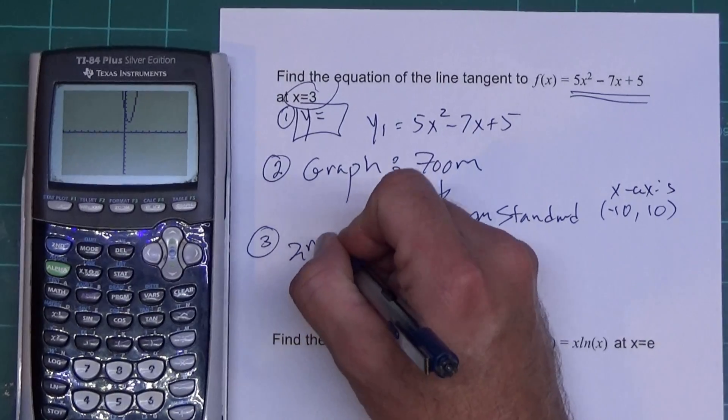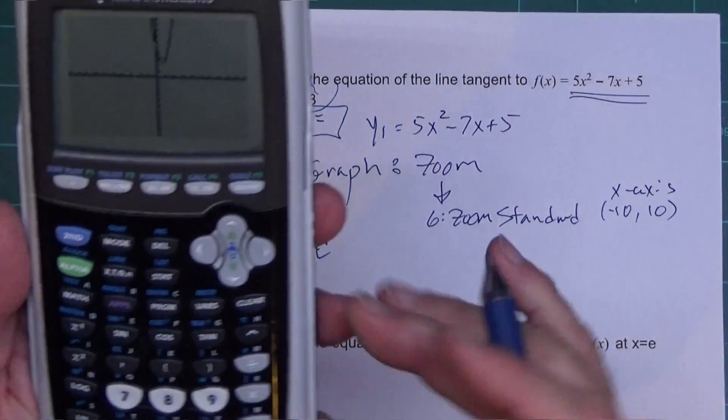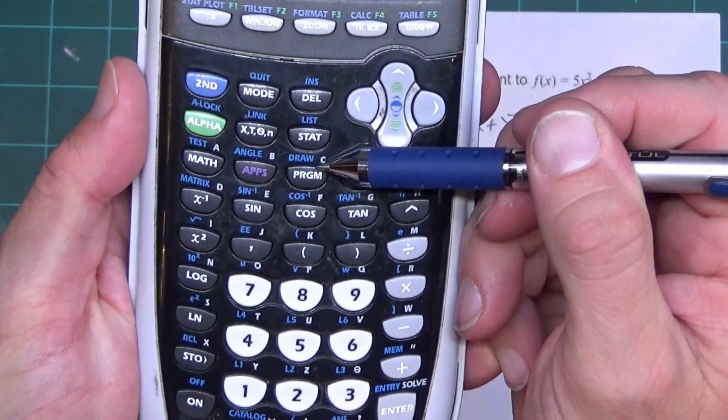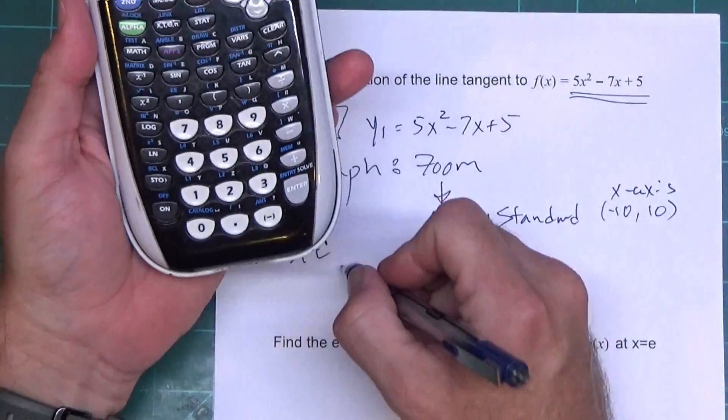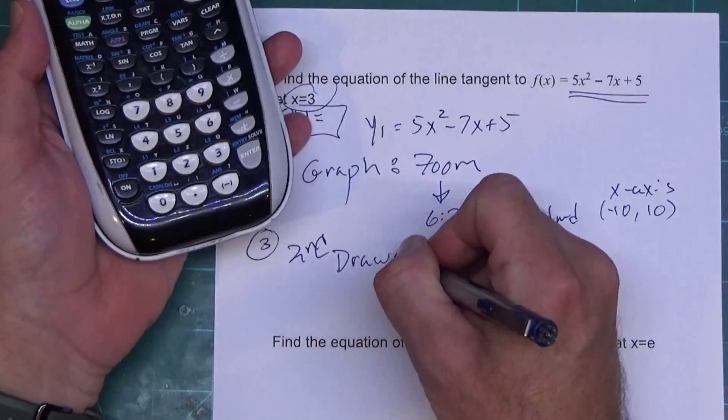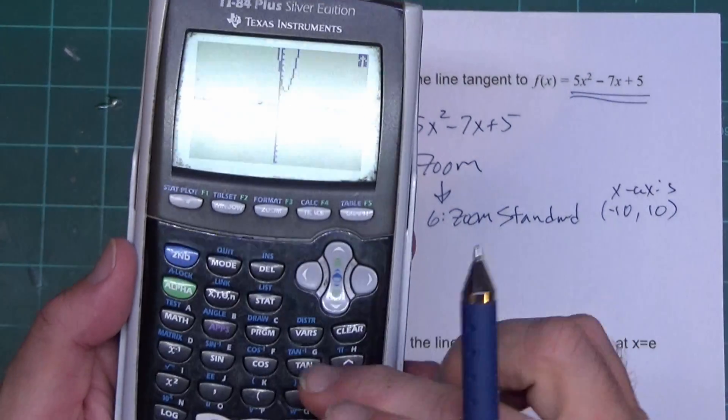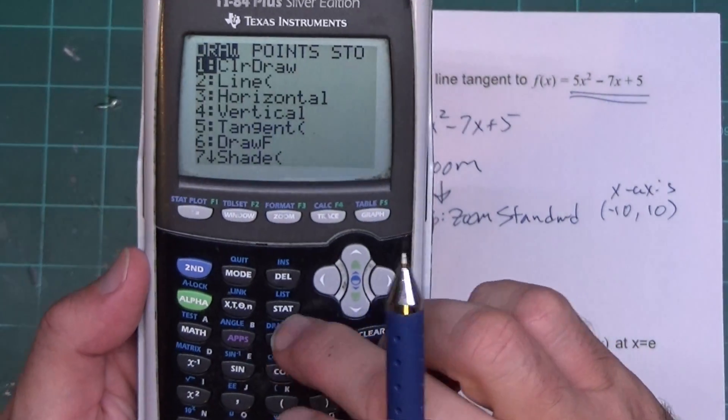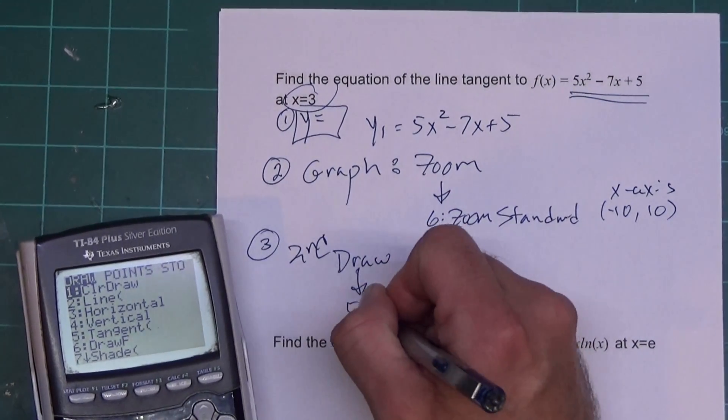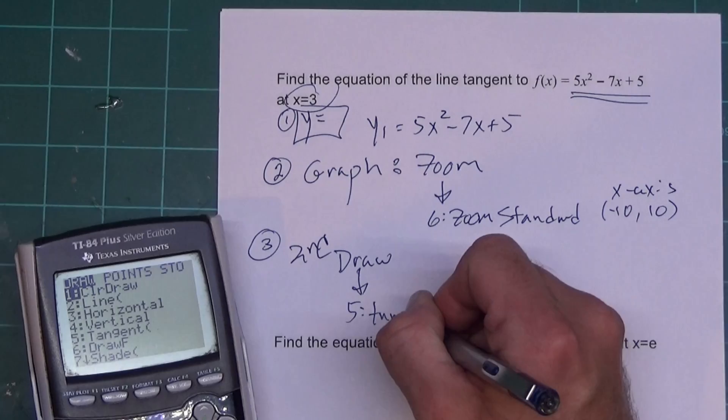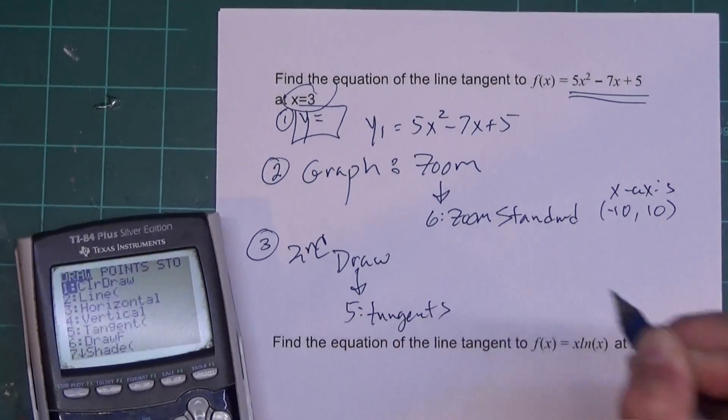And Zoom 6 sets the window from negative 10 to 10 in the x-axis. Now 3 is in that window, so I'm okay with this. Third step, you hit 2nd. And when I hit 2nd, what I'm looking for is this Draw menu right here. It's right above the program button, so I want Draw. So I'm going to hit 2nd, Draw. Now that brings up a menu and you go down to number 5 for tangent.